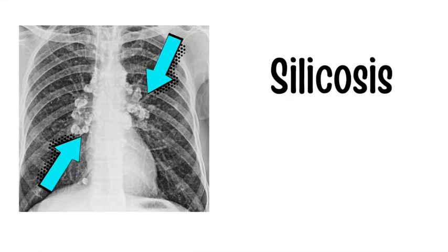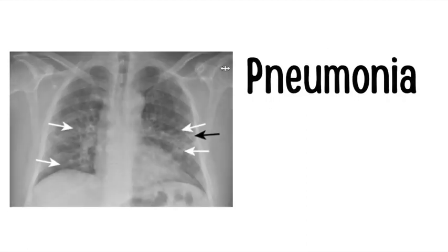These blue arrows are pointing to eggshell calcifications, which are seen in patients with silicosis. Remember that these eggshell calcifications are seen primarily in the upper lobes. Chest x-ray findings for pneumonia can show lobar consolidation or interstitial consolidation.